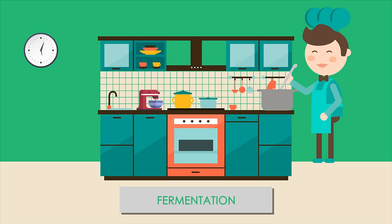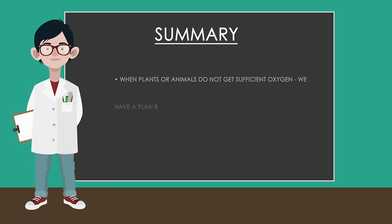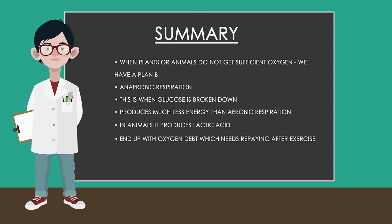In bread making, it is the carbon dioxide that is useful. The bubbles of carbon dioxide help the bread rise by expanding the dough. So you should now know that when our heart and lungs cannot keep up with the oxygen demand, or plants do not have access to sufficient oxygen, we have a backup plan: anaerobic respiration. The glucose is broken down directly but produces much less energy than aerobic respiration, which is why it is the second choice. In animals it produces lactic acid as a by-product, causing muscle cramps, and we end up with an oxygen debt that needs repaying after exercise.